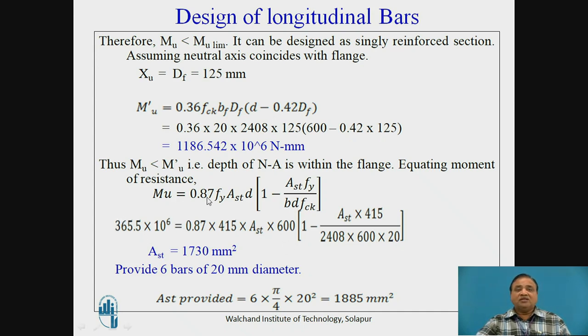Therefore, equating Mu with 0.87 × fy × Ast × d × (1 - Ast × fy / (bd × fck)), this is Mu as per G.1.1b. We will get area of steel 1730 mm², that is provide 6-20 mm bars.